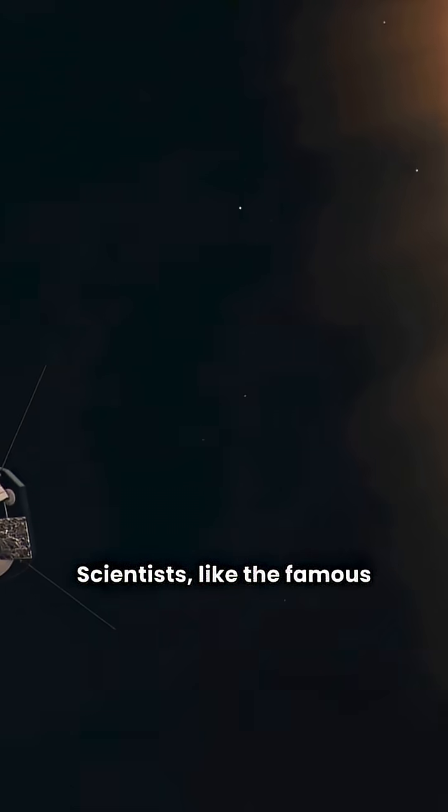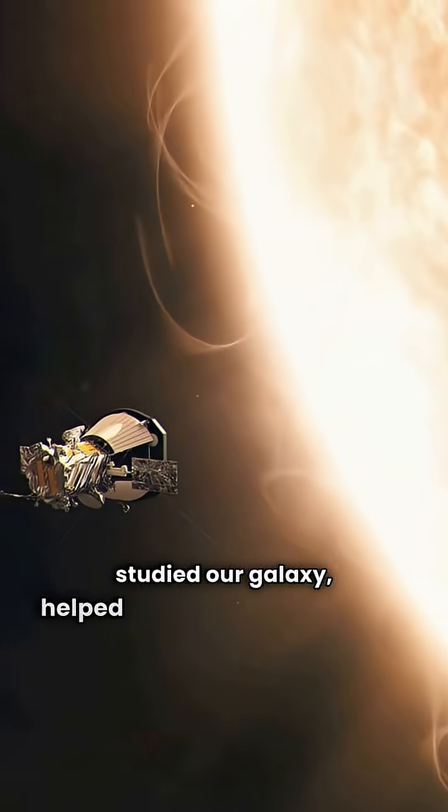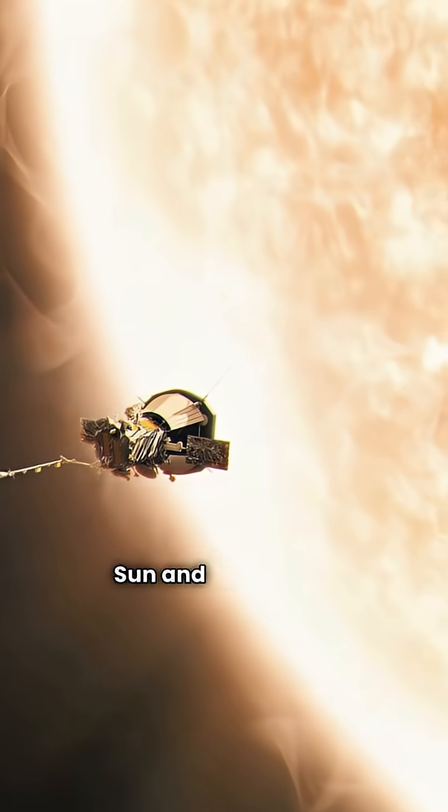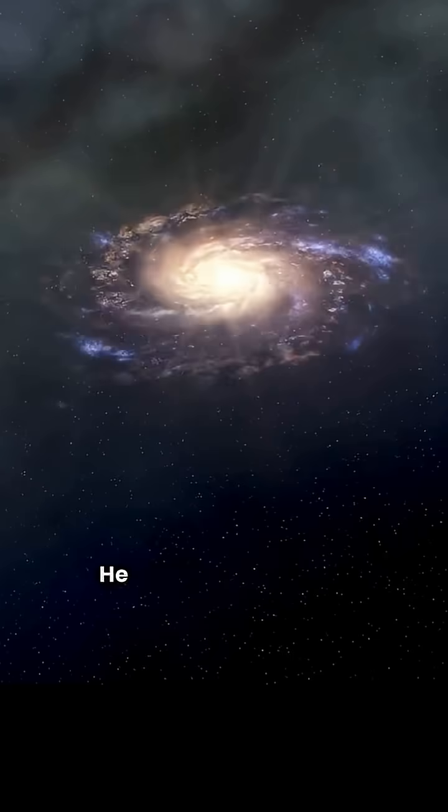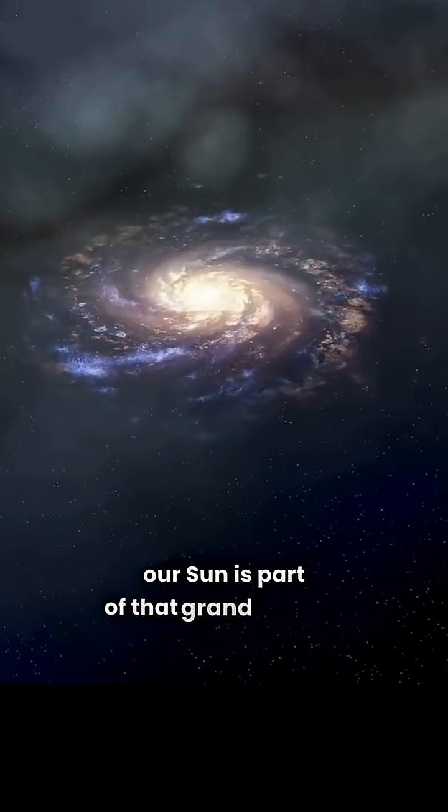Scientists like the famous astronomer Jan Oort, who studied our galaxy, helped us understand how our sun and everything with it moves through space. He showed us how our galaxy spins and how our sun is part of that grand motion.